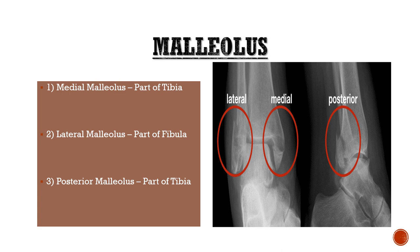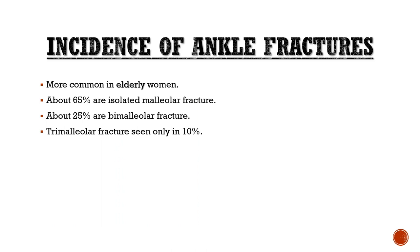There are three malleoli in total: the medial malleolus, the lateral malleolus, and the posterior malleolus. The medial malleolus is part of the tibia, the lateral malleolus is part of the fibula, and the posterior malleolus is also part of the tibia.